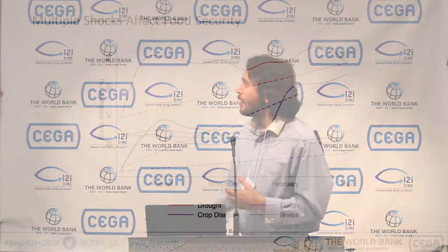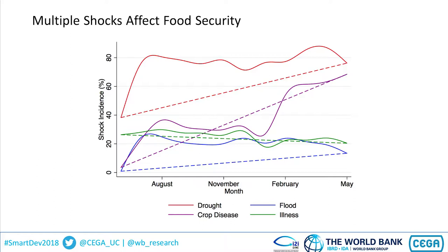Looking at some of the trends, I think a sub-theme of this conference is that everyone hates on linearity, and this is showing why. If you make a linear extrapolation between end line and baseline, you lose a lot of the seasonality and a lot of the fluctuation in how shocks are actually occurring.